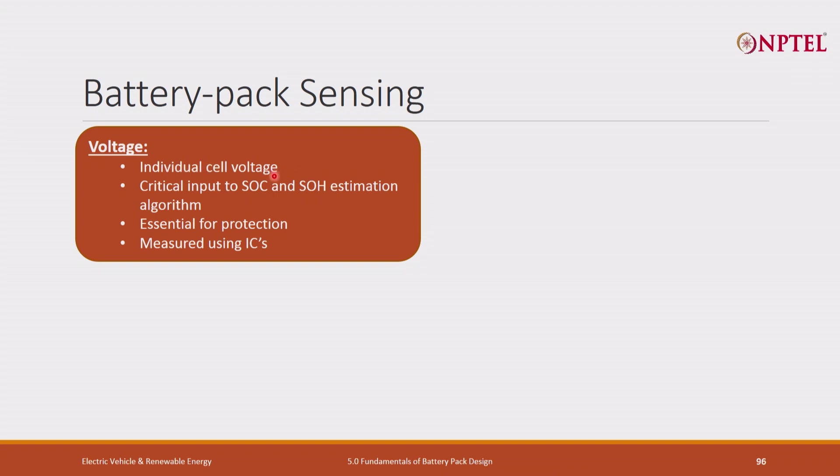Individual cell voltage is important for SOC and SOH calculation, because in a pack the weakest cell determines the SOC, and you do not know which one is the weakest cell. Pack voltage is an important parameter to calculate SOC and SOH. If you do not have voltage of individual cells, it is very difficult to calculate the SOC, because the whole pack condition depends upon the weakest cell. So we have to keep measuring the voltage of each and every individual cell.